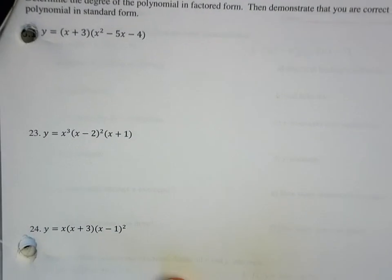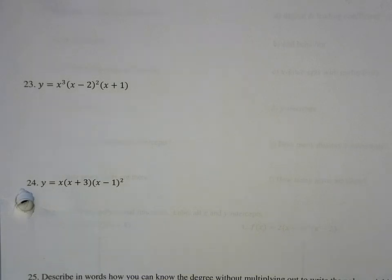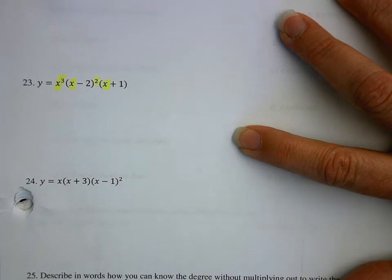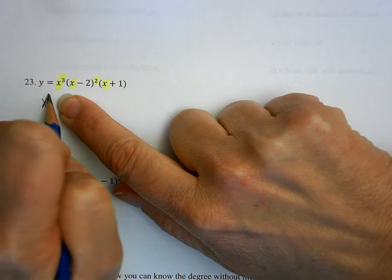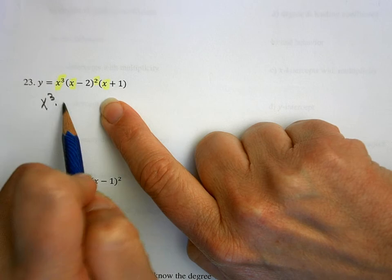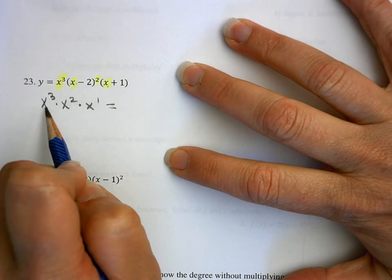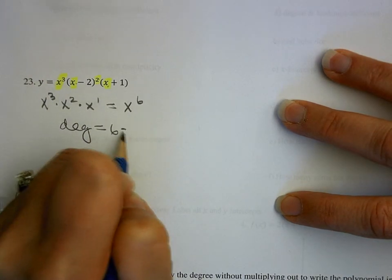Let's take a look at question number 23. We want to determine the degree of the polynomial in factored form, then demonstrate we're correct by writing it in standard form. In factored form, I look at each of my factors: I have x cubed, then x being squared, and then x. So each factor contributes its x and power — x cubed, x squared, and x. Multiplying those together: 3 plus 2 plus 1 equals 6 x's being multiplied, so the degree is 6, which is an even number.